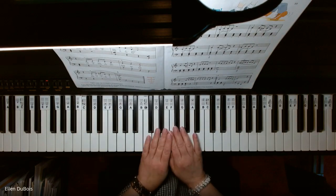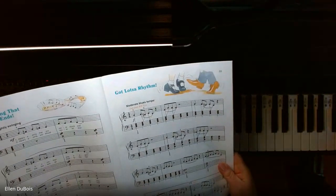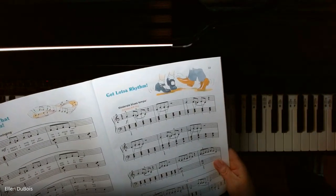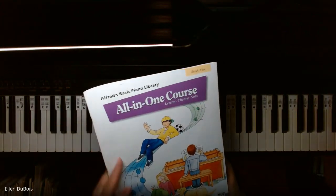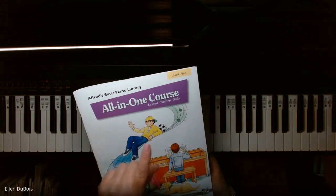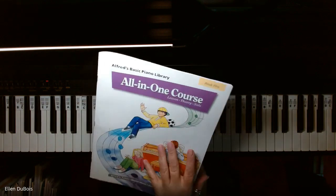Hey everyone, it's Ellen from Rhapsody Music Lessons. We've got page 33, 'Got Lots of Rhythm,' moderate blues tempo. This is from Alfred's Basic Piano Library All-in-One Course, Book 5, the last one in the series with the purple cover.